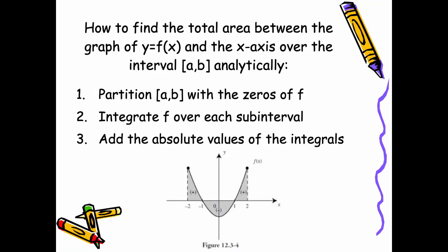So how do we find the total area between the graph of the function y equals f of x and the x-axis over an interval a, b analytically? We look at the zeros of f — we take our function across our interval and see where it crosses the x-axis. Then we subdivide our integral over those areas where the zeros are. On this graph, we would have an integral from negative 2 to negative 1, the next from negative 1 to 1, and then from 1 to 2.